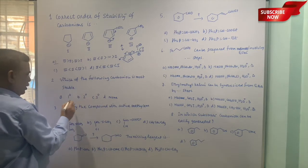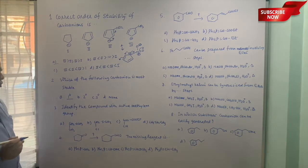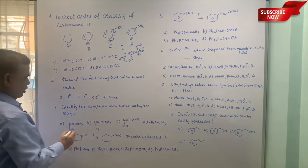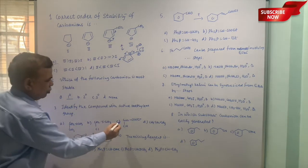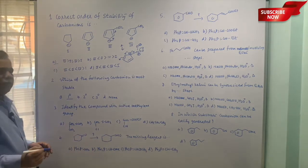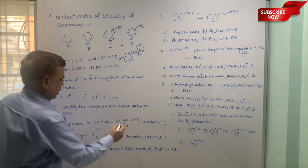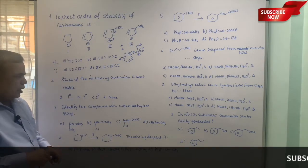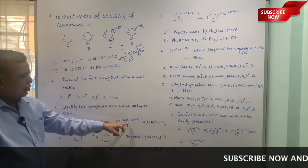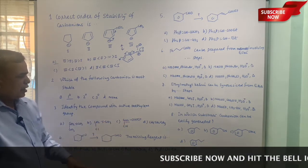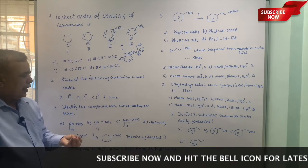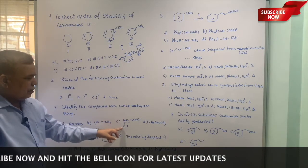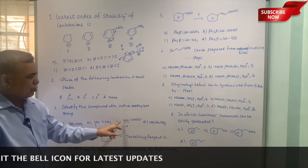Which of the following carbanion is most stable? So normally primary carbanions are most stable. Identify the compound with active methylene group. Now there are so many methylene groups, one, two, three, four. All compounds have methylene groups in them, but the most stable is this one. Or this methylene group is containing active hydrogen atom. You can abstract this proton with a base like NaOEt, NaOMe.